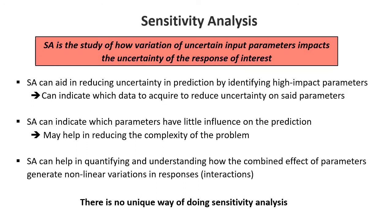It also allows us to reduce the complexity of a problem by identifying parameters that have very little influence on the prediction, and thereby we can simplify the problem by either removing or resetting those parameters to some fixed value. It also allows us to understand and quantify the effect of combinations of parameters. When dealing with non-linear systems — like most uncertainty quantification and forward models — non-linear variations in responses are very common, and so we have what is called interactions.